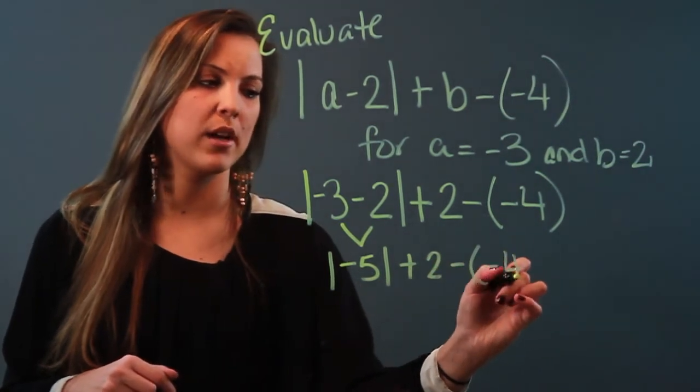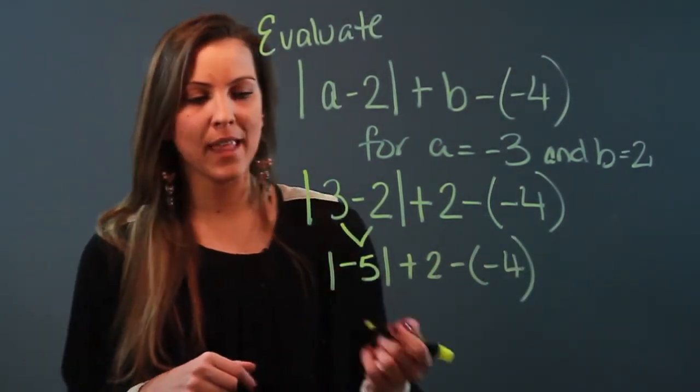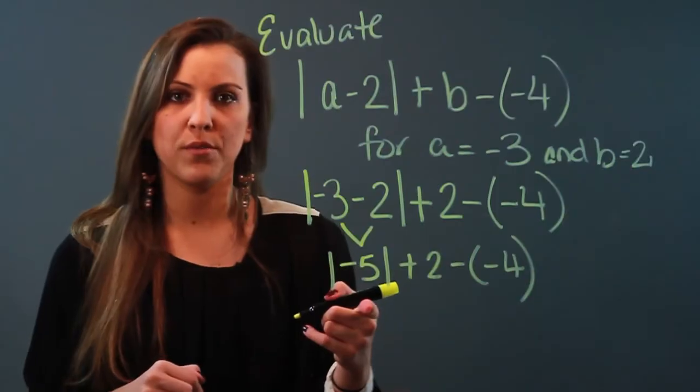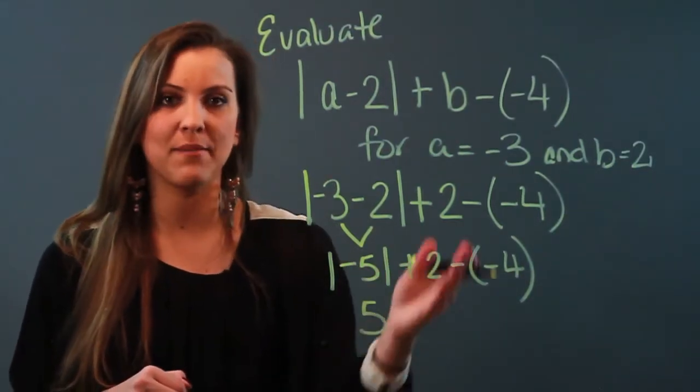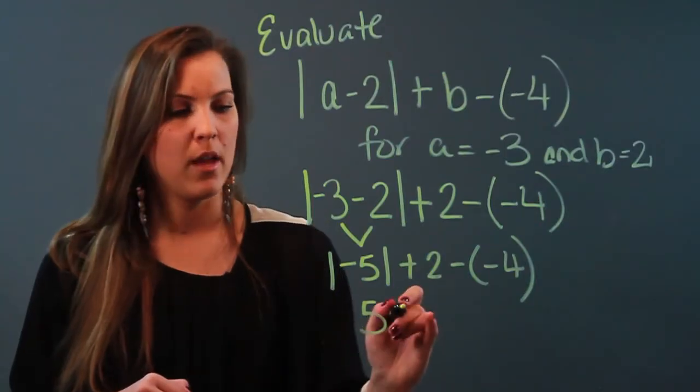The absolute value of -5 is positive 5, so now I can take the bars off because I've taken the absolute value. Bring down everything else, and now I've just got addition and subtraction.